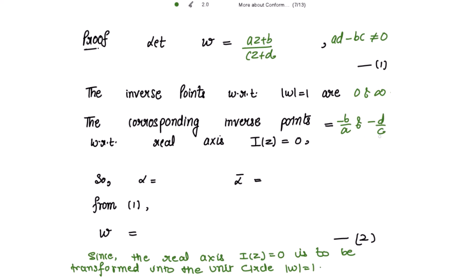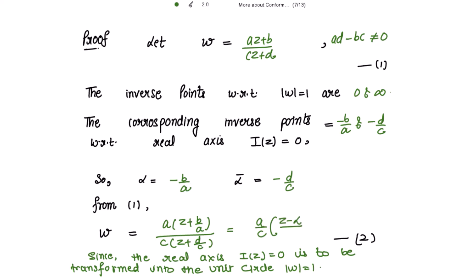Because these are inverse points in the z-plane, let alpha = -b/a and its conjugate alpha-bar = -d/c. From equation 1, taking a common from the numerator and c common from the denominator, we get w = (a/c) · (z - alpha)/(z - alpha-bar). Mark this as equation 2.